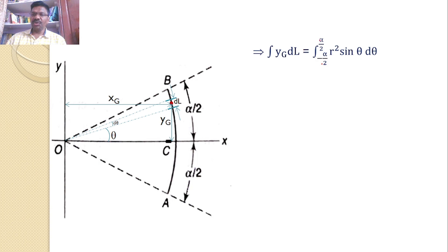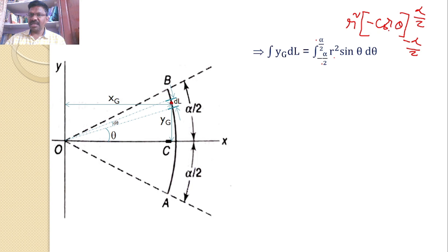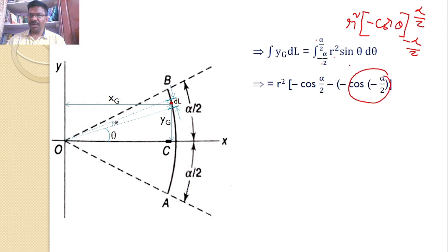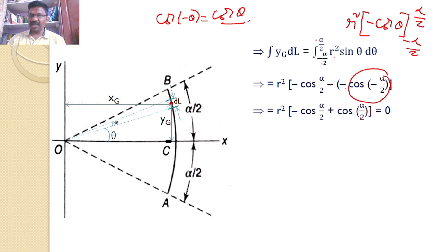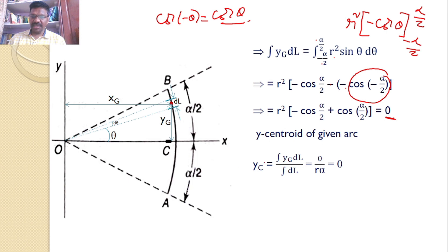Integrating: ∫ from −α/2 to +α/2 of R²·sin θ dθ = R²·[−cos θ] from −α/2 to +α/2. Substituting the limits: R²·(−cos(α/2) − (−cos(−α/2))). Since cos(−α/2) = cos(α/2), this becomes R²·(−cos(α/2) + cos(α/2)) = 0. Therefore, ∫ YG dL = 0, and YC = 0 / (R·α) = 0.